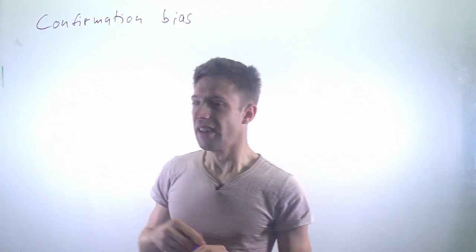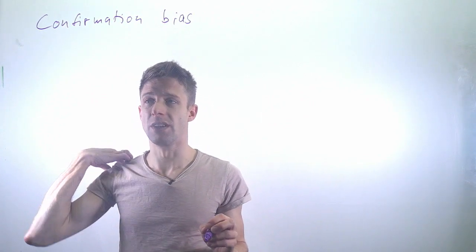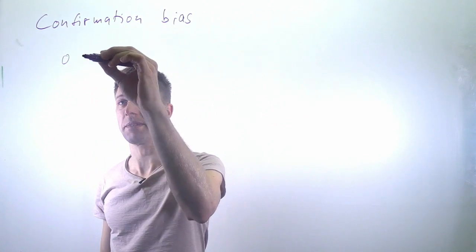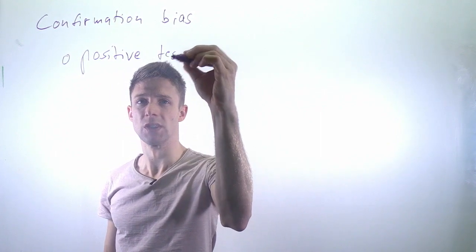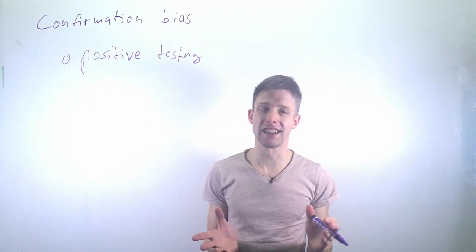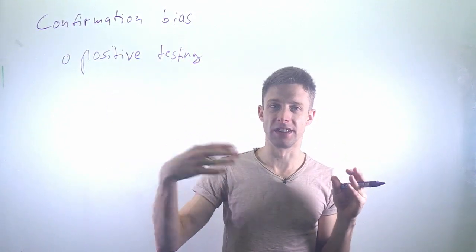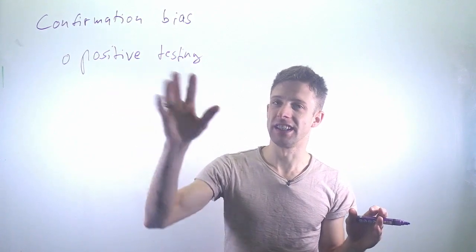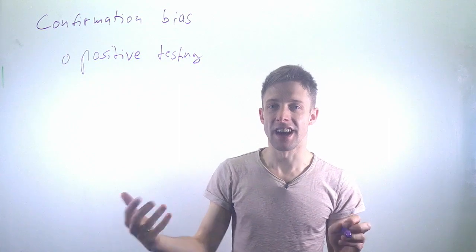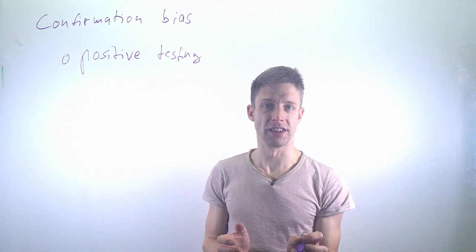In software engineering, confirmation bias manifests as positive testing—the tendency to write tests that confirm your own way of thinking. You're testing a function and end up writing tests that mainly test the positive cases, how you think someone should use the function.